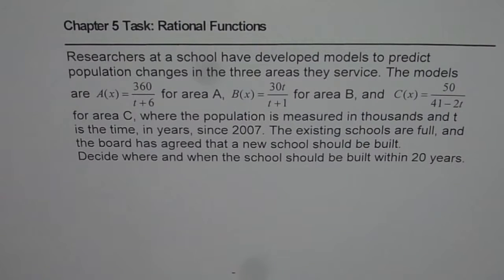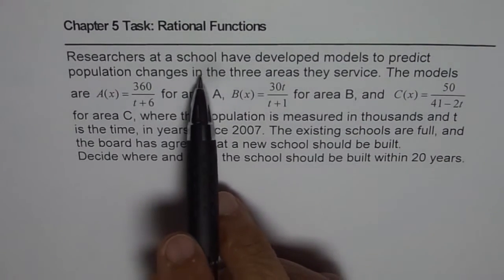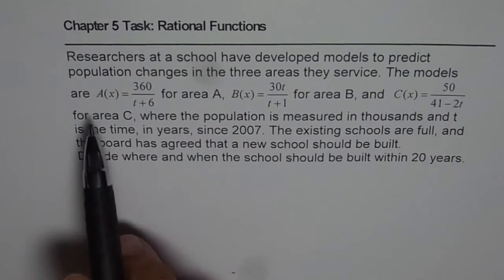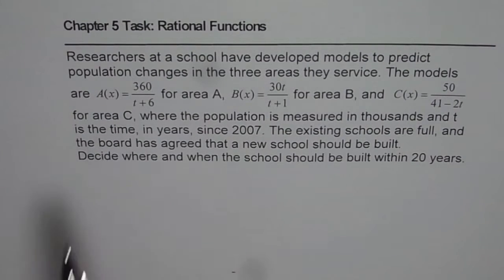The question here is, researchers at a school have developed models to predict population changes in the three areas they service. The models are A(x) = 360/(t+6) for area A, B(x) = 30t/(t+1) for area B, and C(x) = 50/(41-2t) for area C.